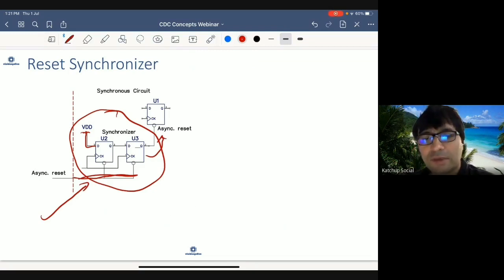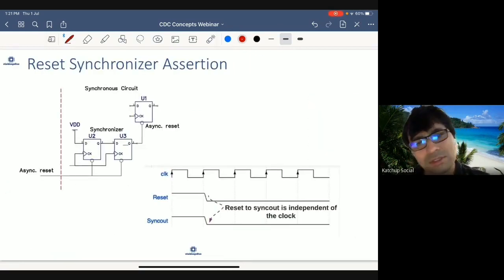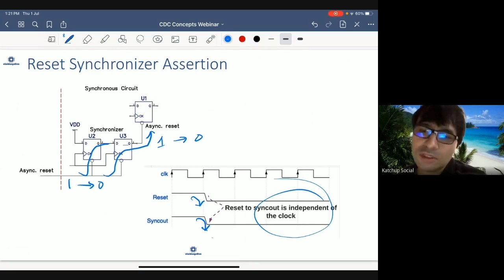So let's see how this behaves both during assertion time, assertion and de-assertion. So during assertion, assertion is independent of the clock. So basically you assert this reset, it goes from 1 to 0. This starts to propagate and basically this changes from 1 to 0 immediately. So you assert the reset, sync out changes immediately. And that's it, it's independent of the clock. No problem. So nothing changed here. And there was also no metastability during assertion.